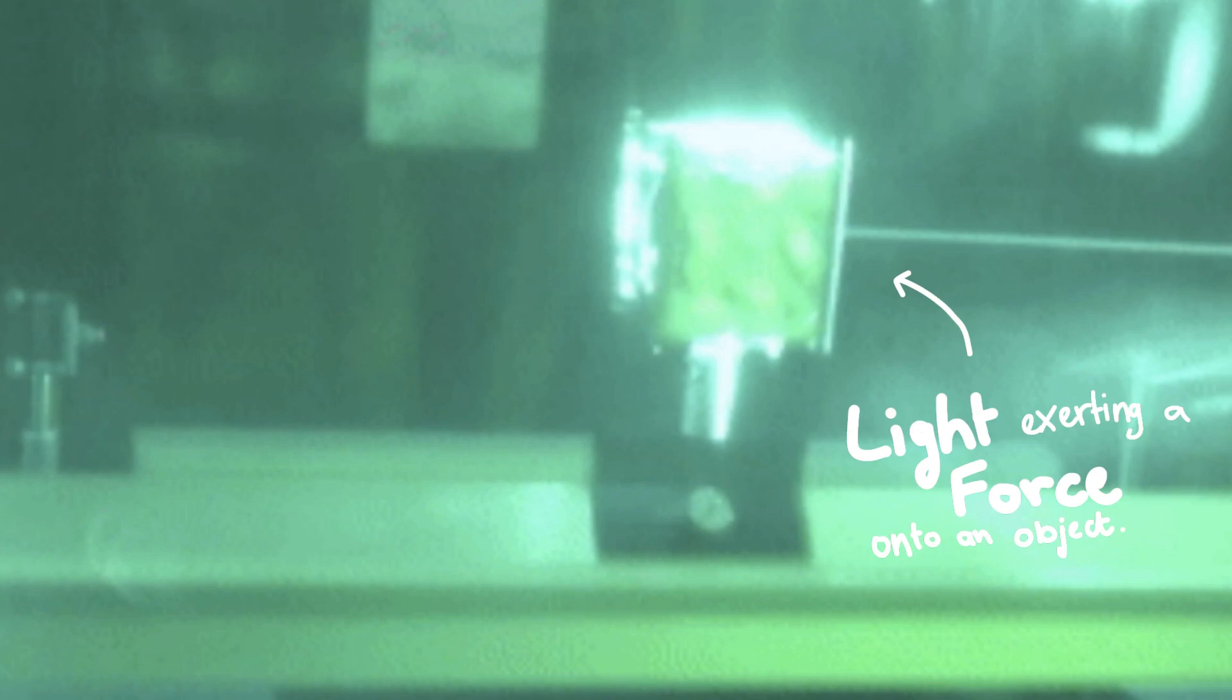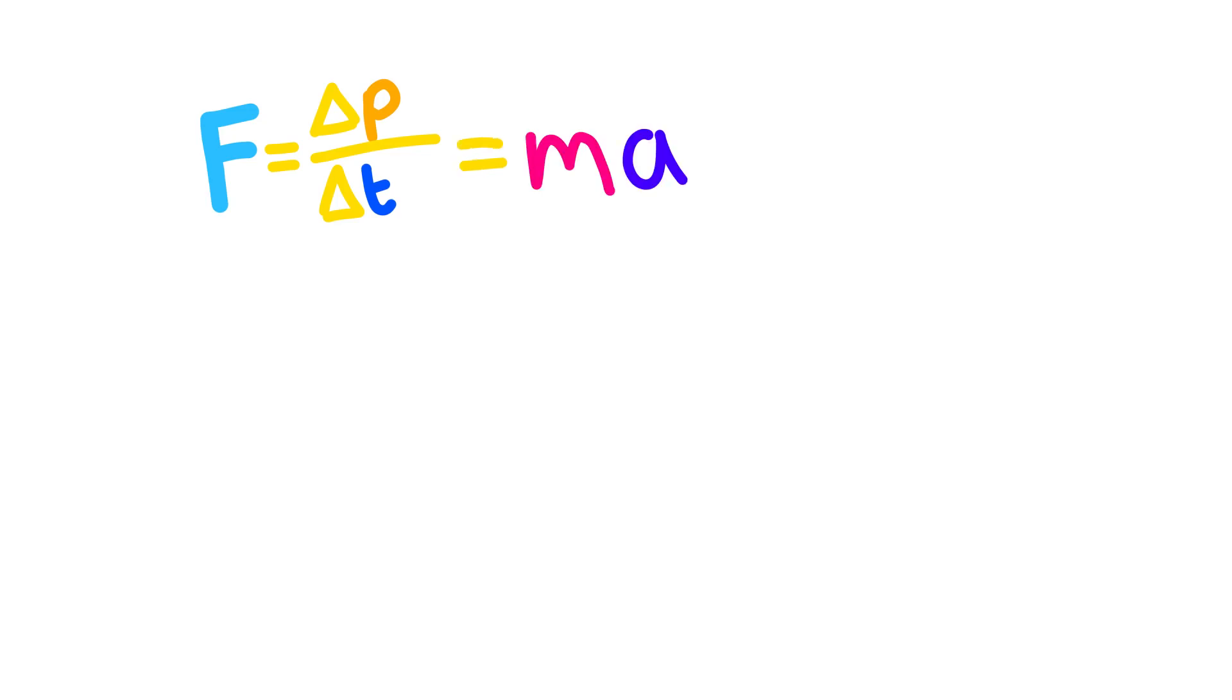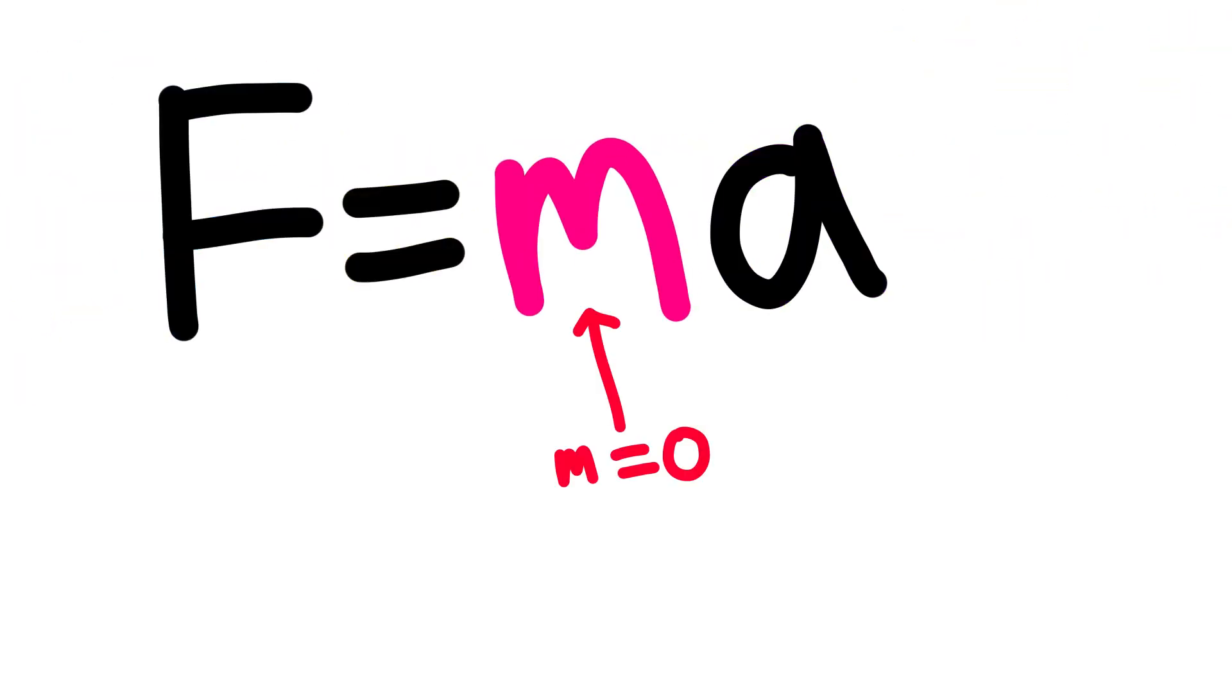This is light exerting a force onto an object. Why is that weird? Let's have a look at what force is. Force is mathematically defined as the change in momentum divided by the change in time. Though this equation's more common form is mass times acceleration. But they're the same thing. The problem here is that light has no mass.